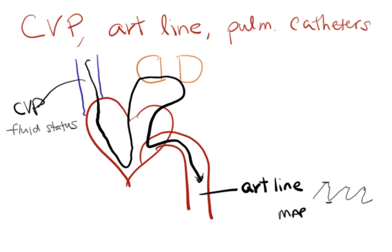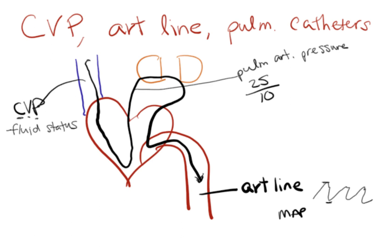If you watch the CVP video, I give you the mnemonic that CVP could stand for 'consider volume problem,' so it tells you your fluid status. Here in your pulmonary artery, if you have a Swan-Ganz catheter, you can figure out what your pulmonary pressures are. Normally a pulmonary artery pressure would be about 25 over 10. With your art line you'd want a normal blood pressure of 120 over 80 with a MAP greater than 65. A normal CVP would be somewhere between two to six — if they're vented it might be a little bit higher.